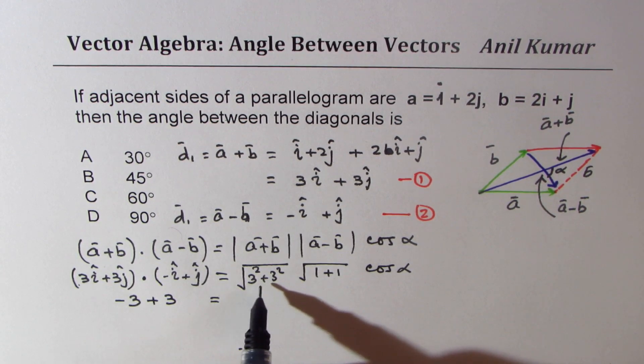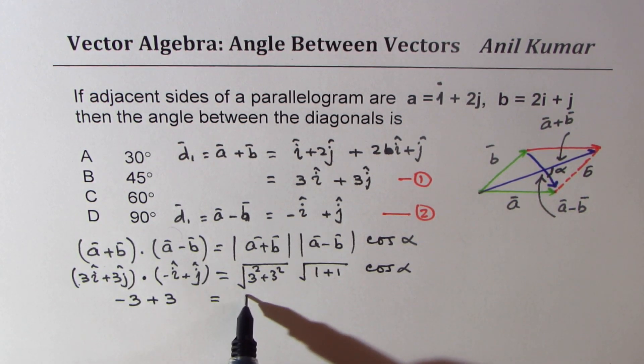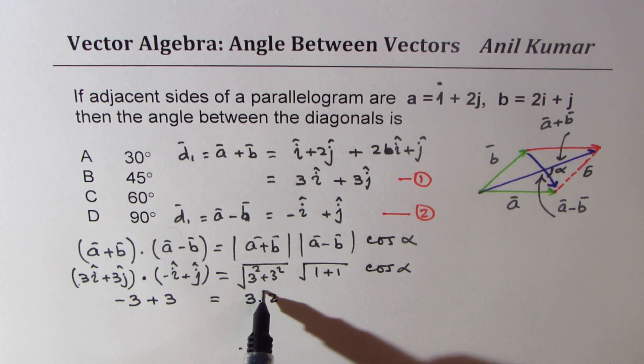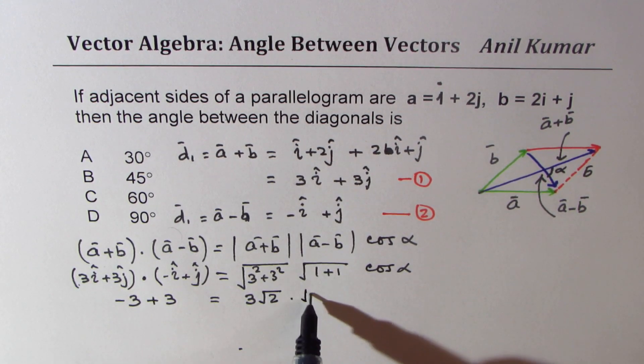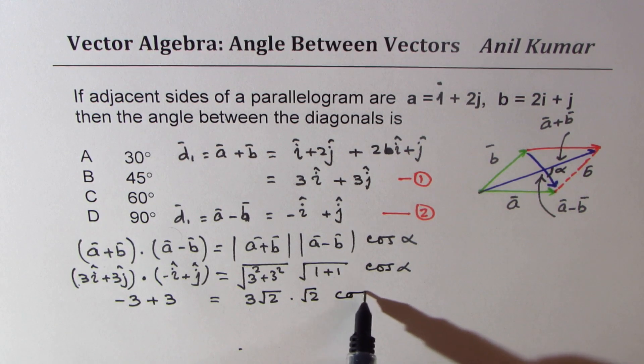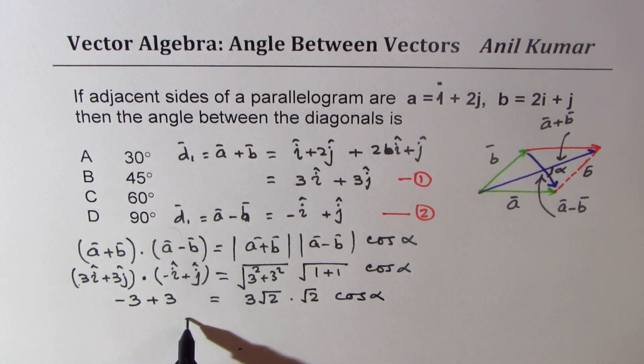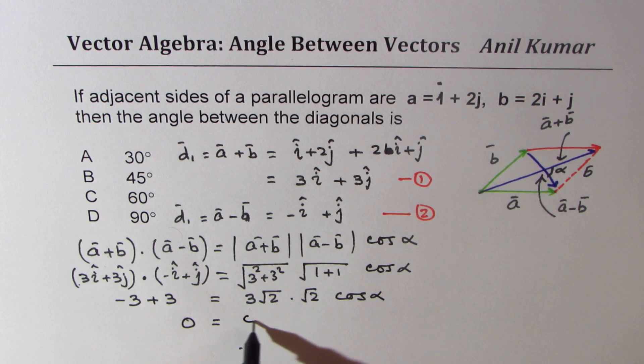So that is 0 for you. So -3 + 3 = 0 for you. This is 9 + 9 = 18, so you can write this as 3√2 times √2 cos of alpha.